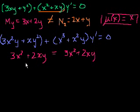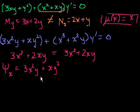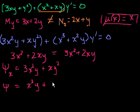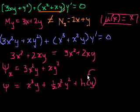Let's solve it. Since we've shown this is exact, we know there's some function ξ where the partial derivative of ξ with respect to x equals 3x²y + xy². Taking the antiderivative of both sides with respect to x, we get ξ equal to x³y + ½x²y². Since ξ is a function of x and y, when we take the partial with respect to x, we might have lost some function that's only a function of y. So instead of a plus c, there could be a whole function of y, h(y), that we add back.